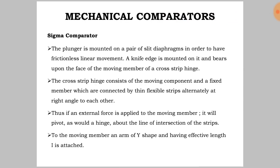The plunger is mounted on a pair of slit diaphragms in order to have frictionless linear movement. A knife edge is mounted on it and bears upon the face of the moving member of a cross strip hinge. The cross strip hinge consists of a moving component and a fixed member which are connected by thin flexible strips, alternatively at right angles to each other. Thus, if an external force is applied to the moving member, it will pivot as would a hinge above the line of intersection of these strips. To the moving member, an arm of Y shape having effective length L is attached.